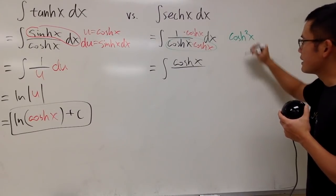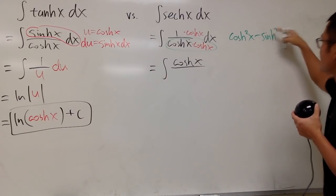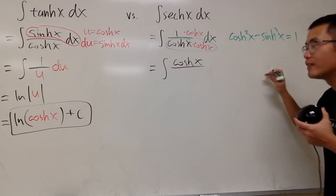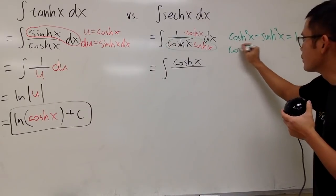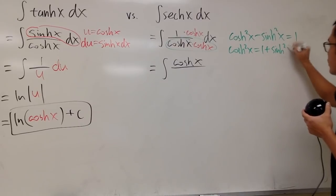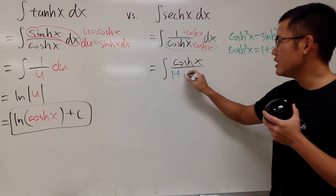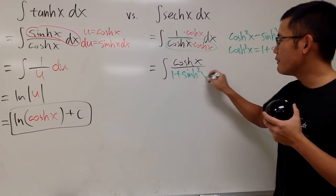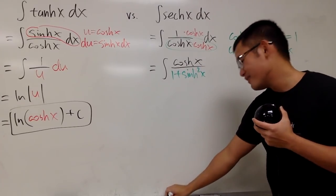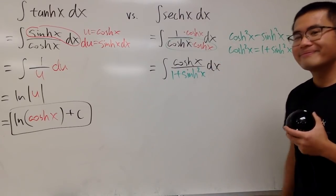Recall that cosh squared x minus sinh squared x equals 1. We can add this on both sides, so cosh squared x equals 1 plus sinh squared x. Much better. I will put this down right here. We still have sinh and cosh that will help each other out. Very nice. I'll put down the dx right here.